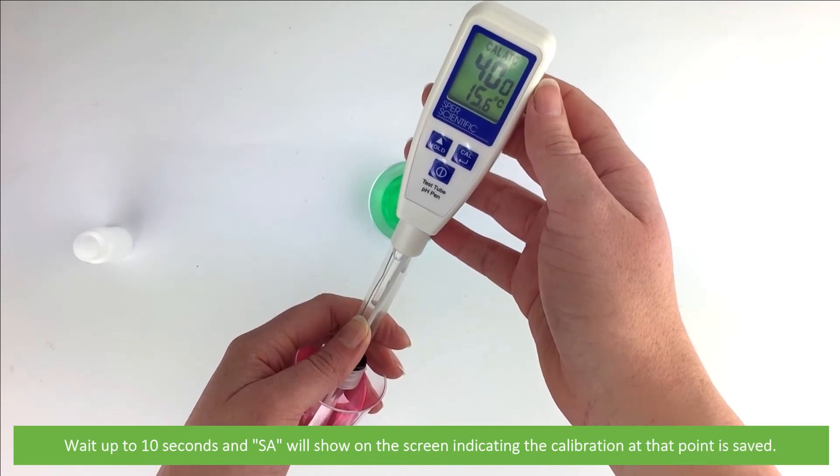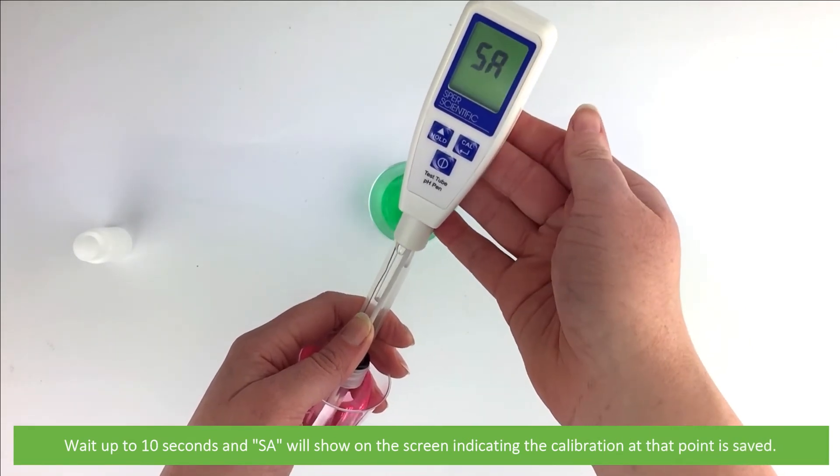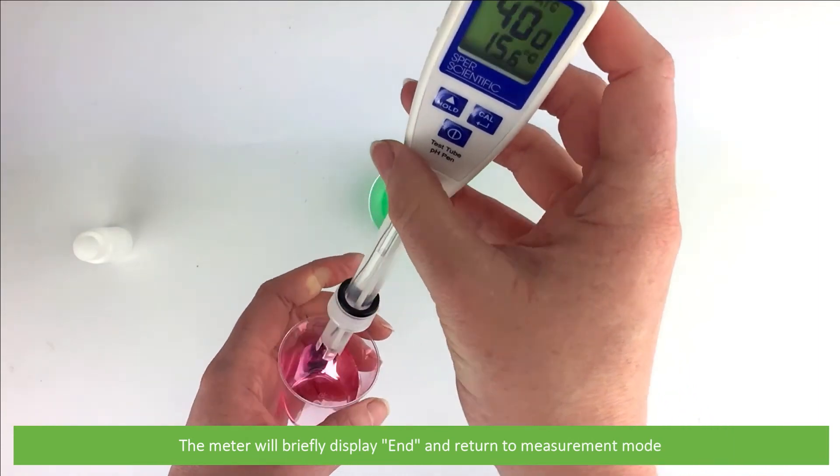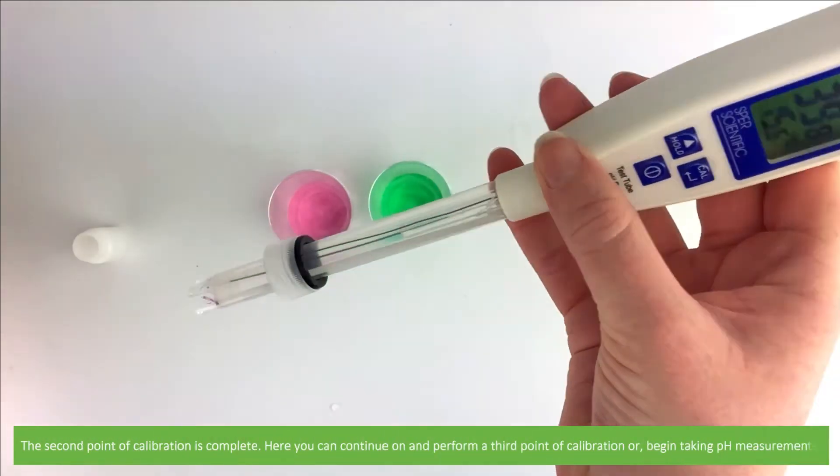Wait up to 10 seconds, then SA will show on the screen indicating the calibration at that point is saved. The meter will briefly display end and return to measurement mode. The second point of calibration is complete.